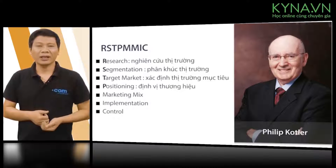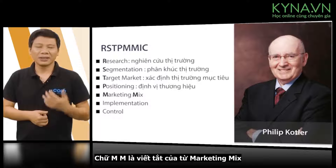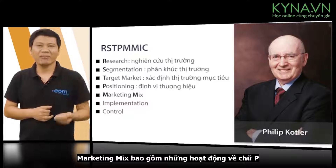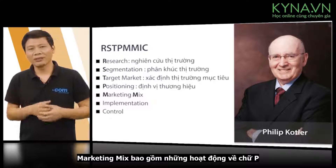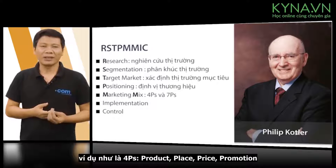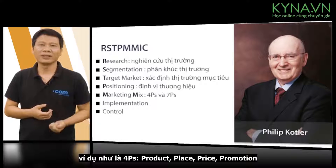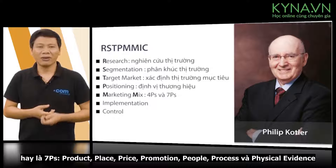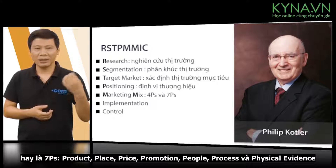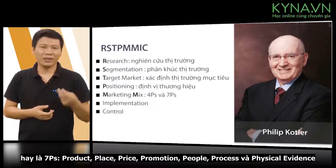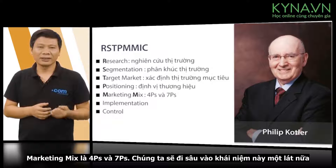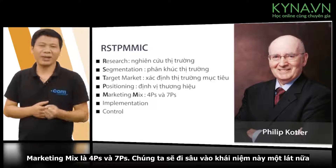The M stands for Marketing Mix. The marketing mix is about the Ps. For example, 4P includes product, price, promotion, and place. 7P extends this with people, process, and physical environment.